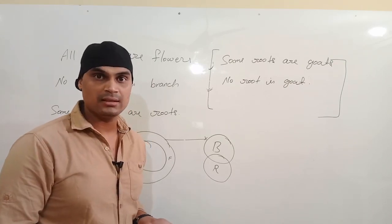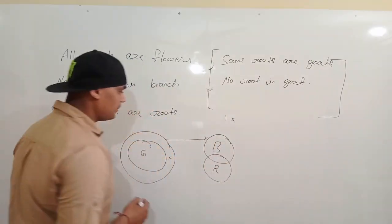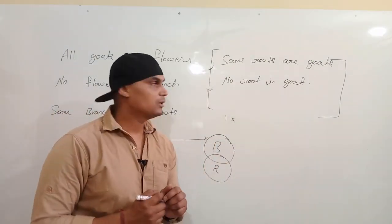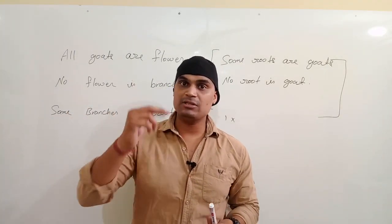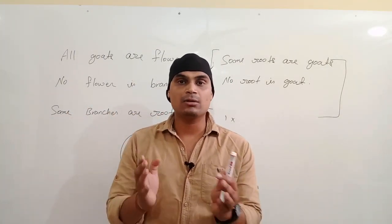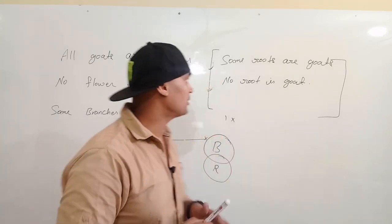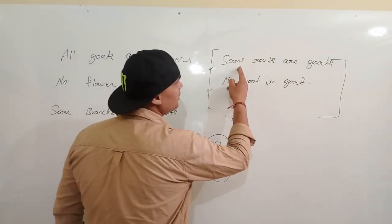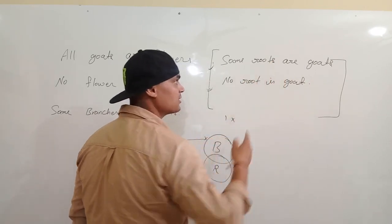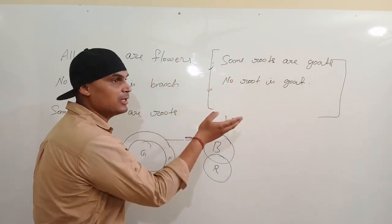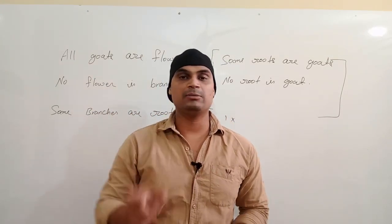Ab dekhte hain: 'Some roots are goats.' Is figure mein nahi hai, aur agar figure alag bane toh connection ho sakta hai — lekin certain nahi hai. Unhone certain bol diya ki some roots are goats — toh ye statement galat hai. Next: 'No root is goat.' Jahan dono statements mein same cheezein poochi gayi hon aur dono galat hon, wahan 'either or' ka case banega — yani complementary case.